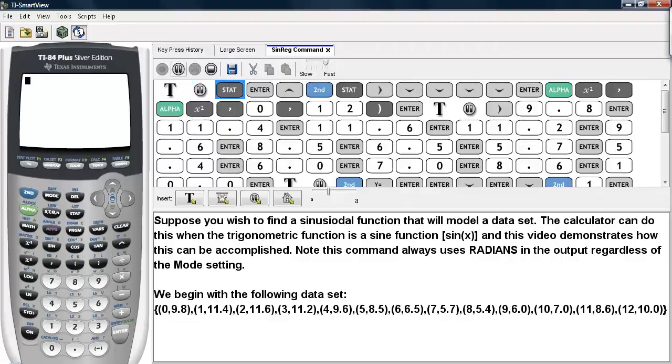I'll go ahead and do stat, and then edit. I'm going to highlight L1, and I'm going to introduce the sequence command by going under list and then ops. I'll select the sequence command here. I'll go ahead and start typing in the sequence that I want. It'll be a value i, and the variable will be i, and it'll start from 0, and it will go up to 12.